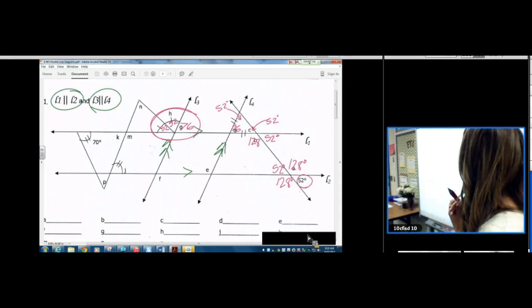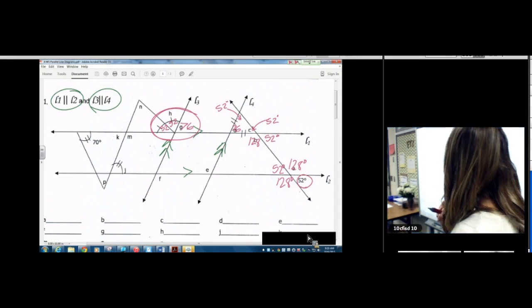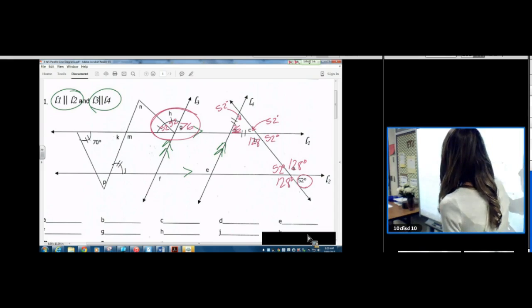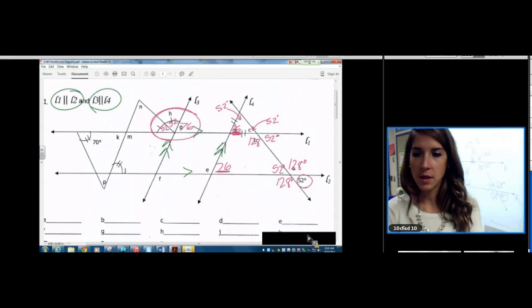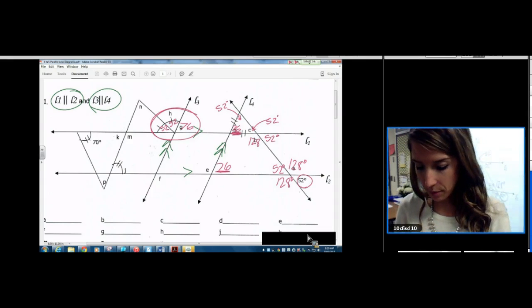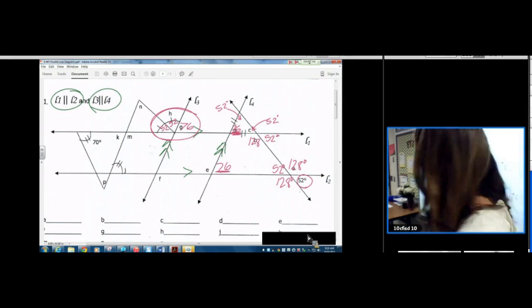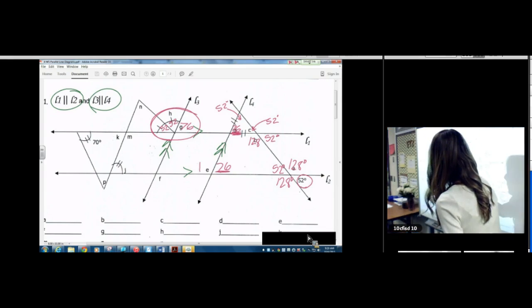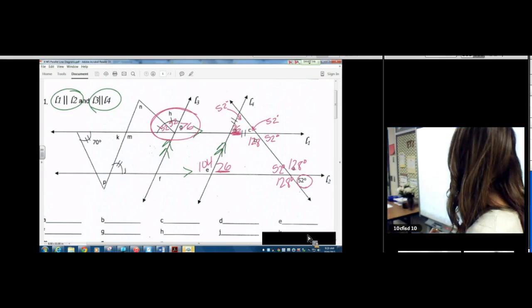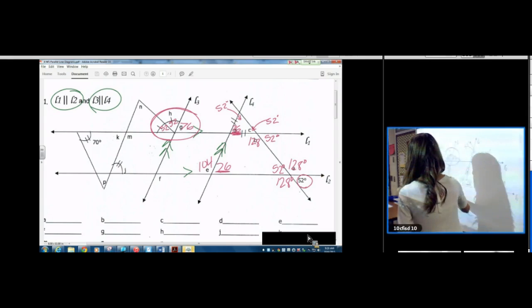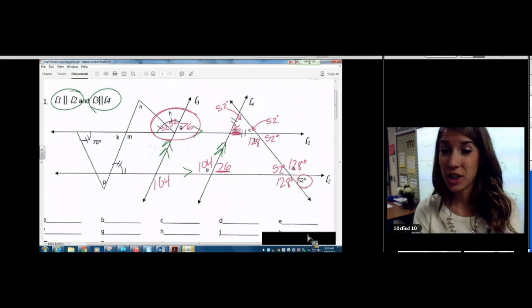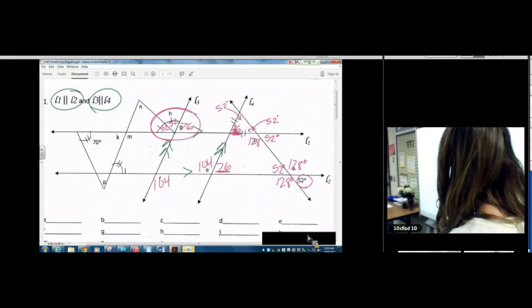I'm going to kind of jump around if that's okay with you guys. 76 here is corresponding angles with right here. Those are corresponding. So I'm going to use that. Now we need to find the supplement of 76. And this one is 104. Now we can use alternate interior. 104, 104. Alternate interior angles.